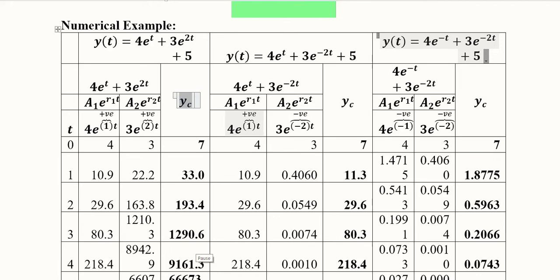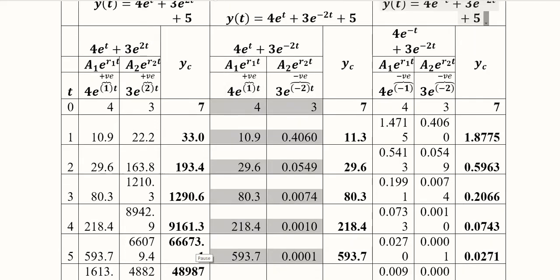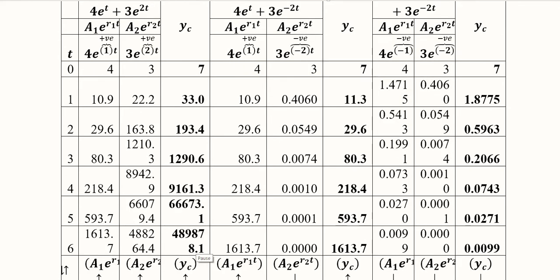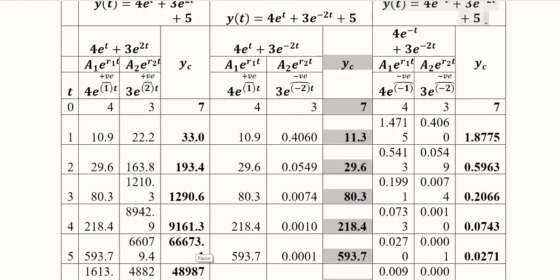In the second case with r1=+1 and r2=−2, you can pause the video to verify the values by substituting t into each part of the complementary function. The sum of these parts shows the value is still increasing — though not as rapidly as the first case — from 7 reaching only about 1613. A positive and a negative root are cancelling each other's effect, but the deviation is still increasing.